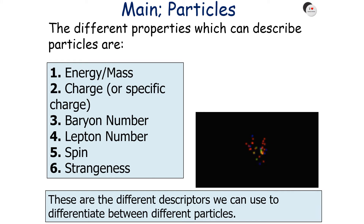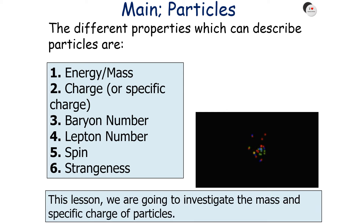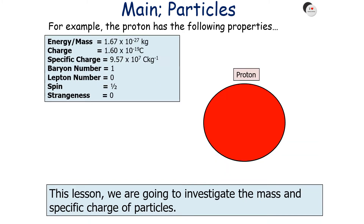So there are six different properties which we can use to describe particles: their energy and mass, their charge or specific charge, their baryon number, their lepton number, their spin, and their strangeness. In today's lesson, we're going to focus predominantly on the mass and the specific charge of particles. For example, we can describe the proton with the following properties: mass of 1.67×10⁻²⁷ kg, charge of 1.60×10⁻¹⁹ coulombs, specific charge of 9.57×10⁷ C/kg, baryon number of 1, lepton number of 0, spin of one-half, and strangeness of 0.